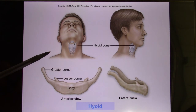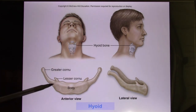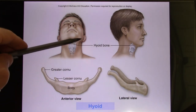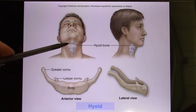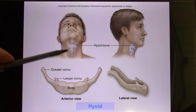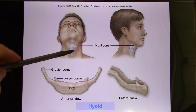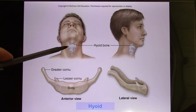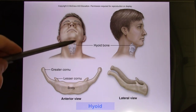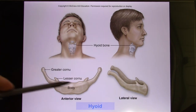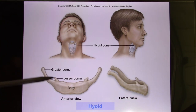This bone is called the hyoid — it's the bone in your vocal cord area. In your vocal cord, most structures are cartilage, so the hyoid is the only bone there.